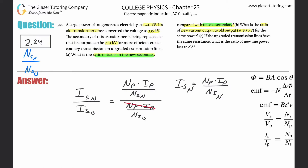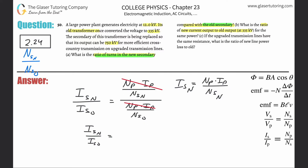The N_P and I_P terms cancel when we form the ratio, leaving us with N_S_old divided by N_S_new. But we already found N_S_new over N_S_old equals 2.24, so for the current ratio we need the reciprocal: 1 over 2.24, which equals approximately 0.447. So the new current output is about 0.447 times the old.